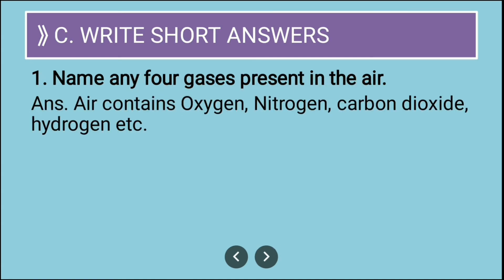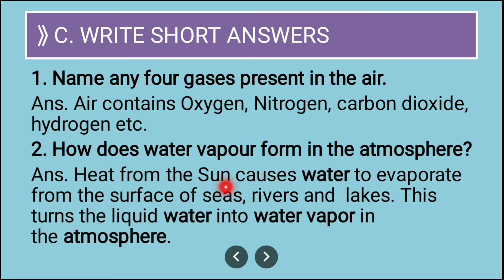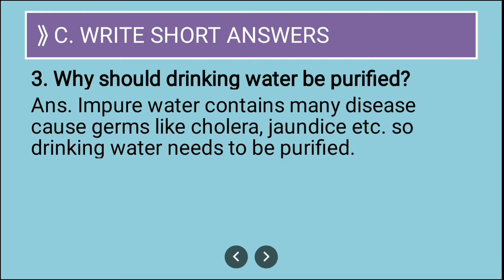Now short answer questions. First: name any four gases present in air - air contains oxygen, nitrogen, carbon dioxide, and hydrogen. Second: how does water vapor form in the atmosphere? Heat from the sun causes water to evaporate from the surface of seas, rivers, and lakes, turning liquid water into water vapor in the atmosphere.